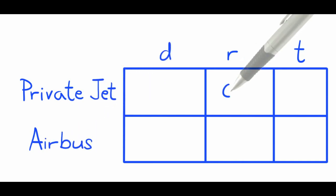Next, always fill in what we know first: the private jet 600 mph, the airbus 450 mph. The amount of time for both planes we do not know. We'll just call it x.